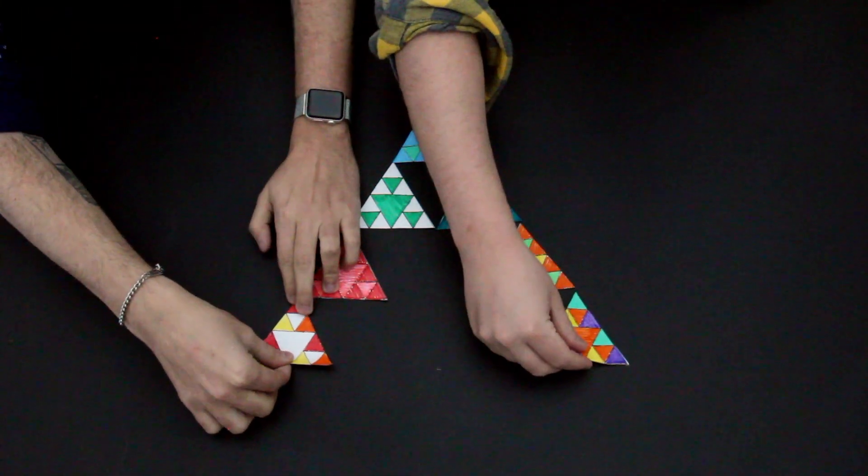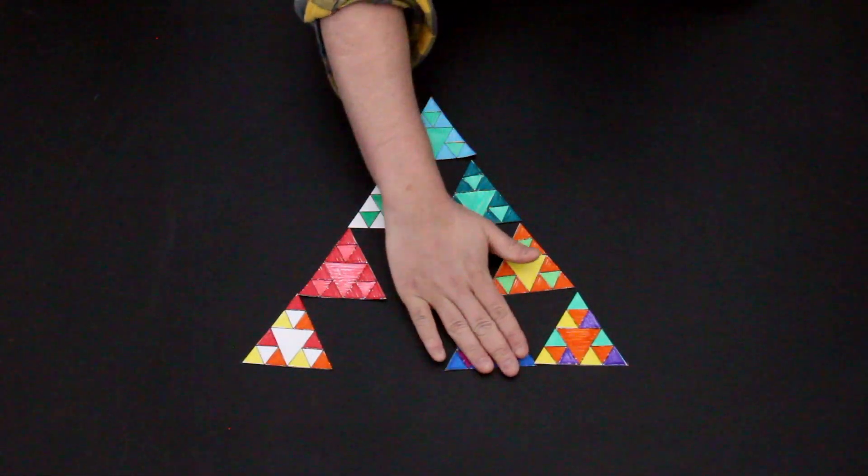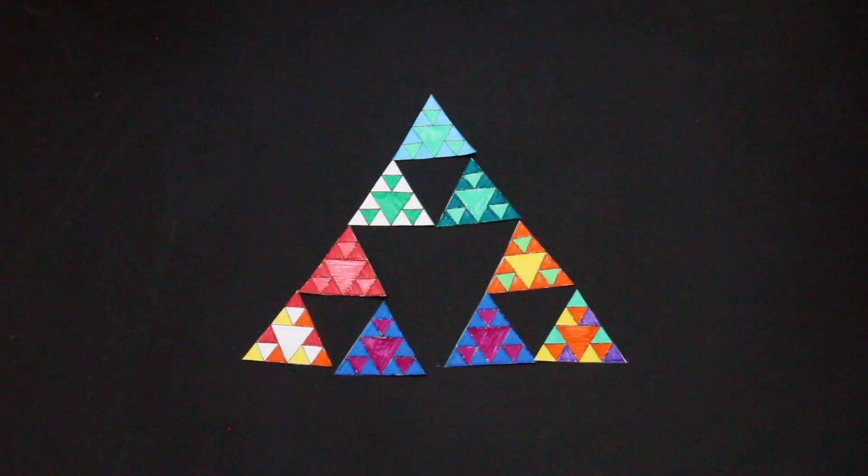For older students, you might ask how many triangles were in the second generation of the Sierpinski Triangle? How about the third generation? Is it possible to calculate the number of triangles in the fourth generation without counting them?